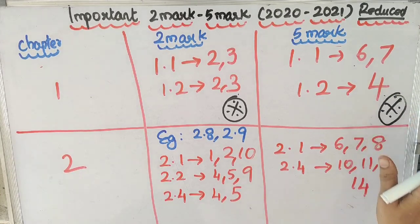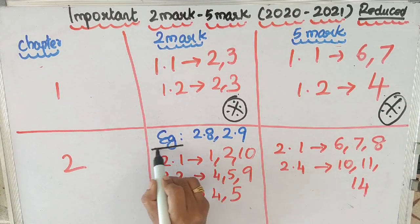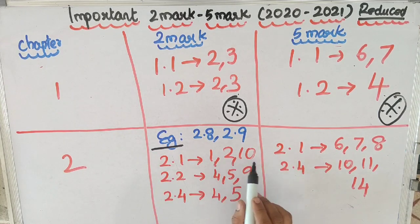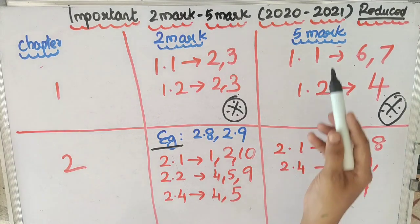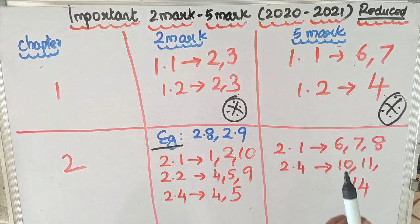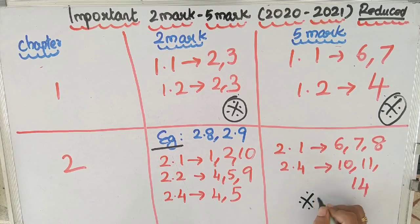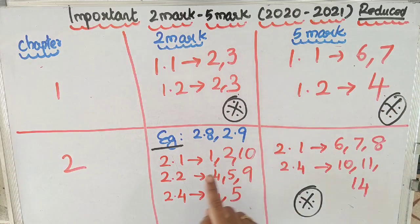In the second chapter, 3 questions are important. Exercises 2.8 and 2.9 are important. 2.1 exercise questions 1, 2, and 10 are important. 2.2 exercise questions 4 and 5 are important. For the 2-mark questions in the second chapter, 2.1 exercise questions 6, 7, and 8 are important. 2.4 exercise questions 10, 11, and 14 are important.